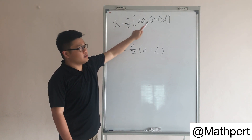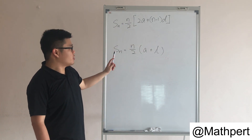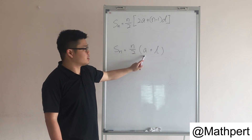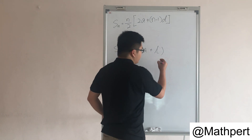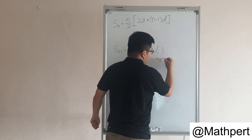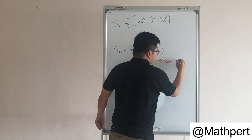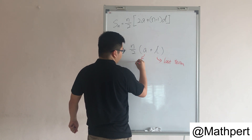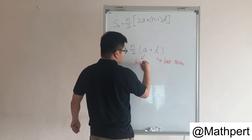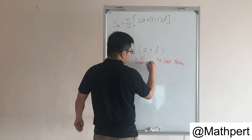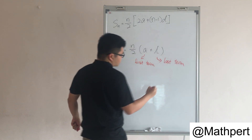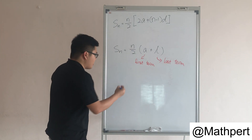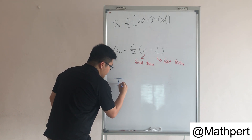These two n's are the same. For this second formula, a is the first term and l is the last term of the arithmetic progression. And with these two equations, we will have another one: Tn equals Sn minus Sn minus 1.